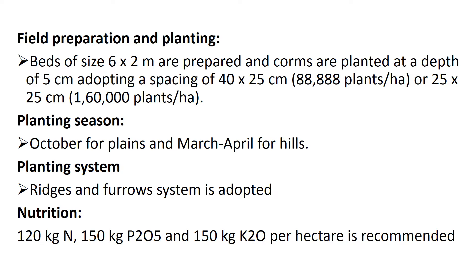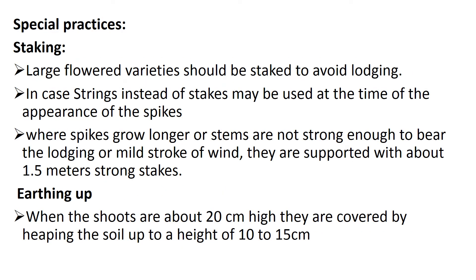Regarding planting season, it is planted in October in plain areas, and March to April in hill areas. The planting system is generally ridges and furrows. The nutrient recommendation is 120:150:150 kg per hectare of Nitrogen, P2O5, and K2O respectively.